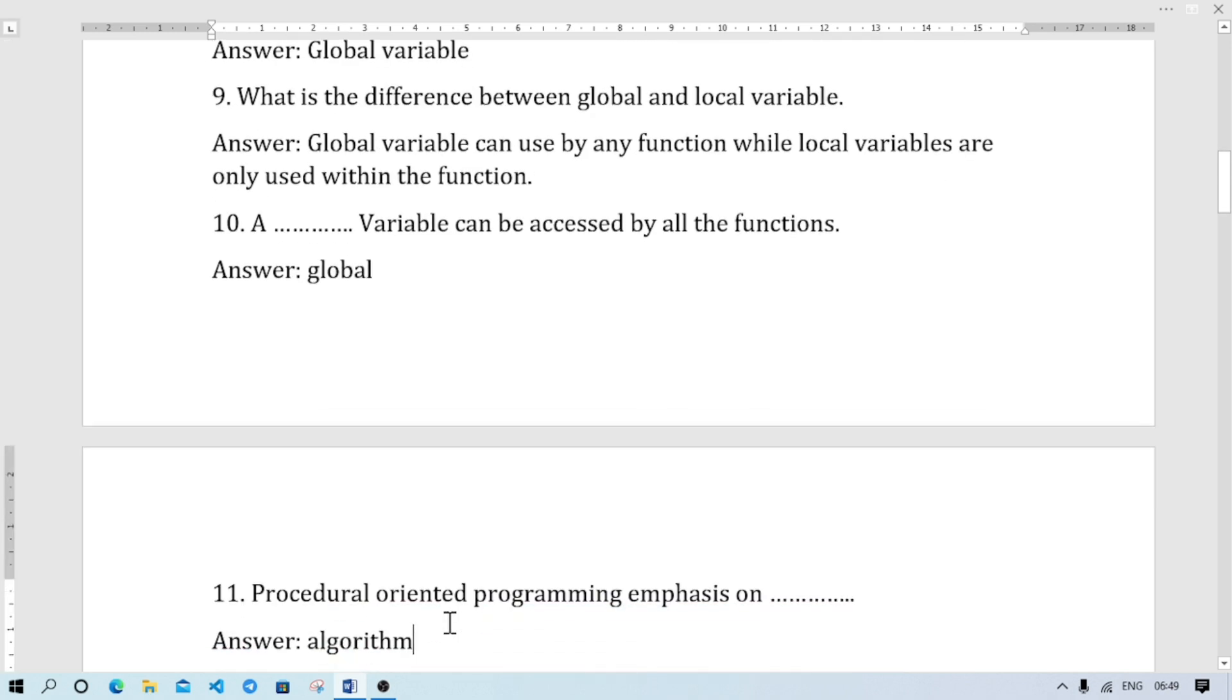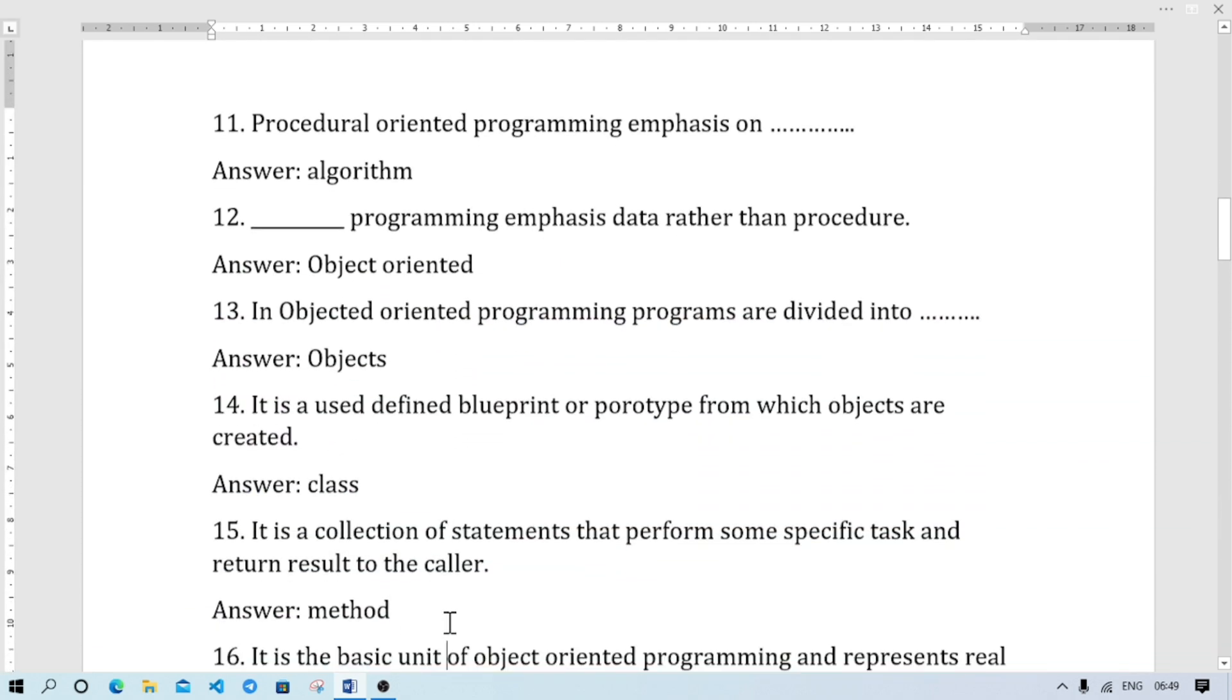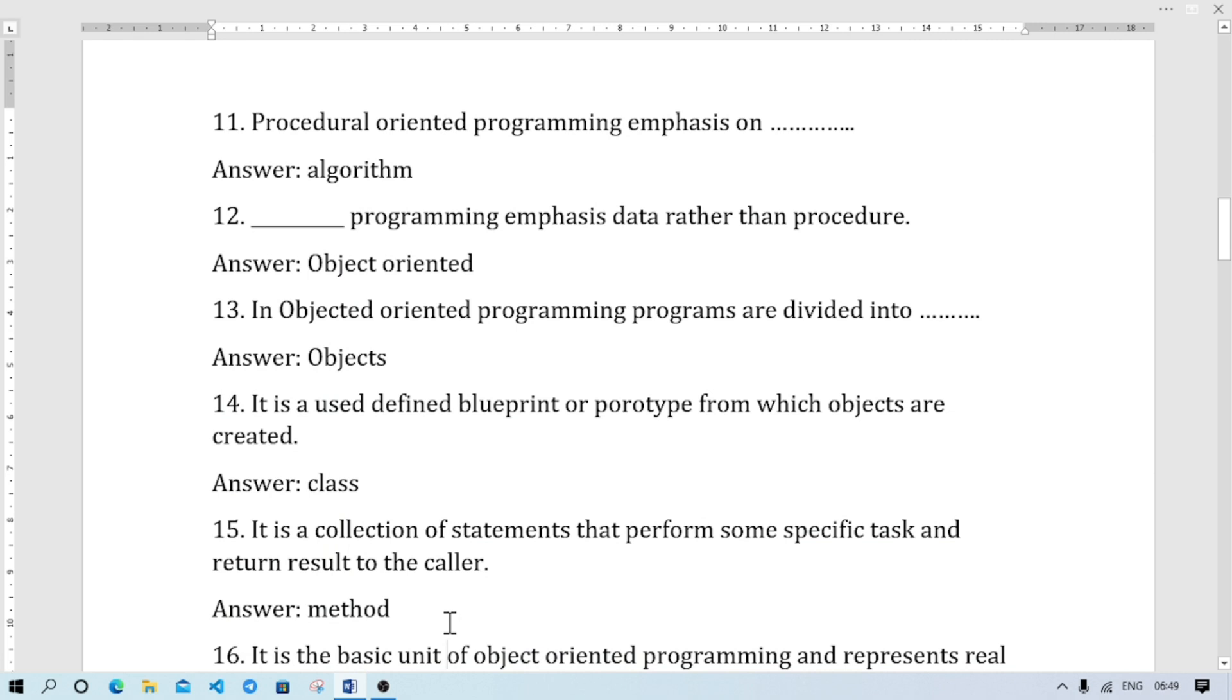Number 11: Procedure-oriented programming emphasizes on algorithm, and object-oriented programming emphasizes on data. Object-oriented programming emphasizes data rather than procedure. Programs are divided into objects.